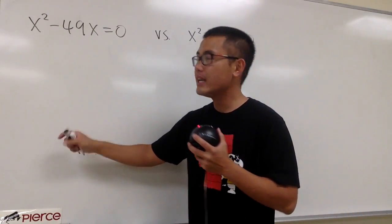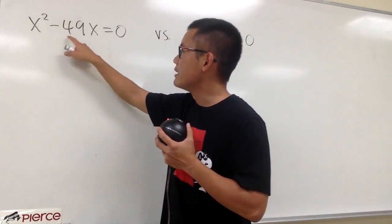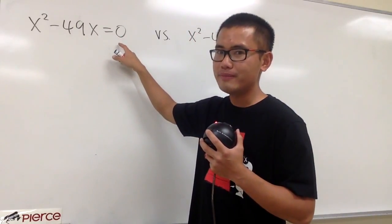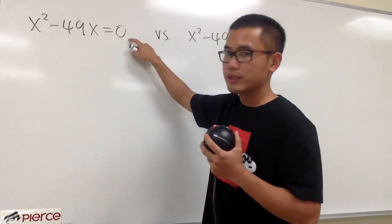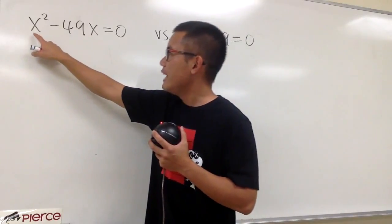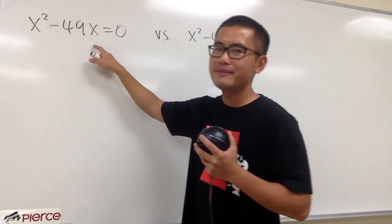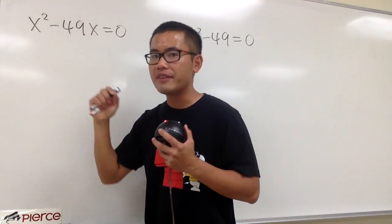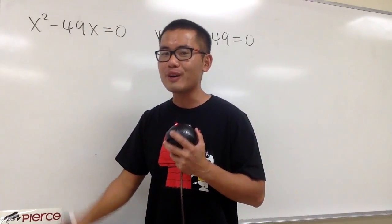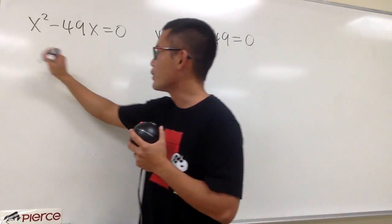Let me do this one for you guys first. Here we have x squared minus 49x is equal to 0. The right-hand side is equal to 0 already, and we see we have the x squared and then the minus 49x. Both terms have an x factor. We can factor out that common factor, and we'll do that right now.